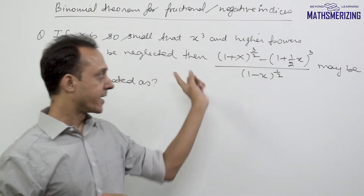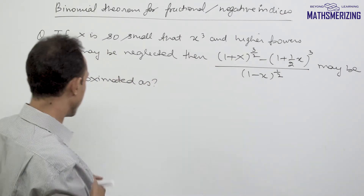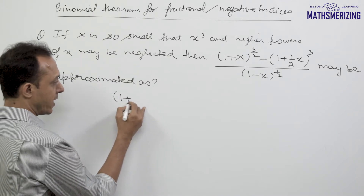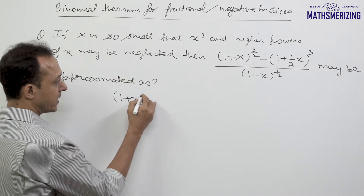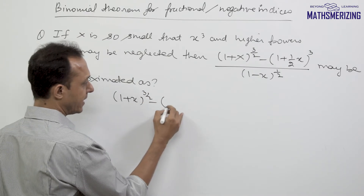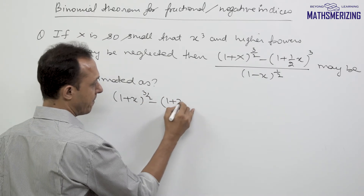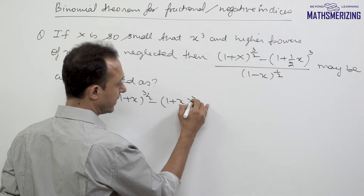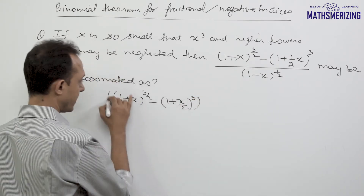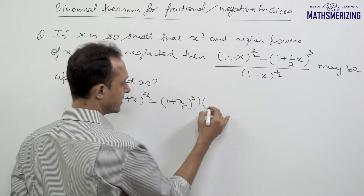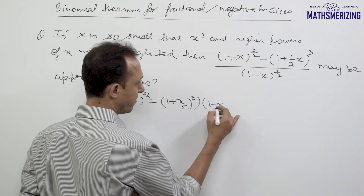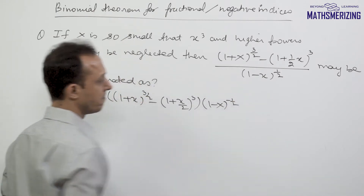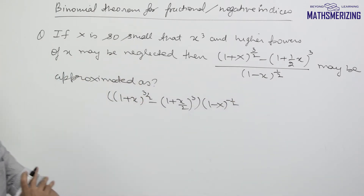What I'll do is start expanding. I'll write it as (1 + x)^(3/2), then multiplied by (1 + x/2)^3, and I'll write the denominator as (1 - x)^(-1/2).